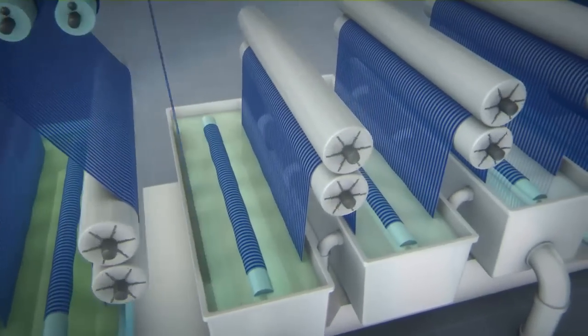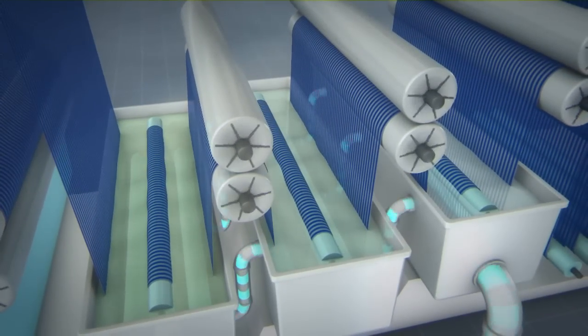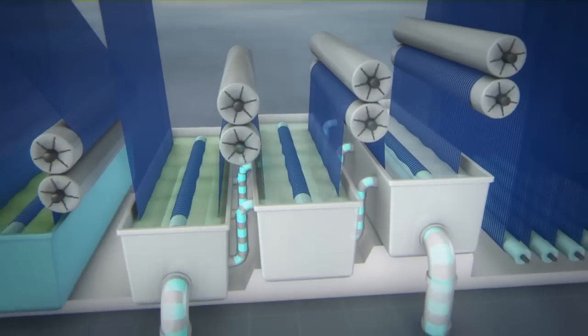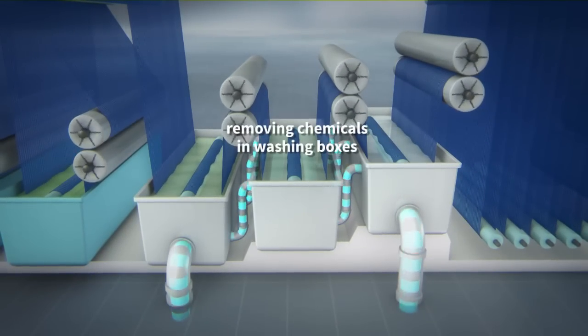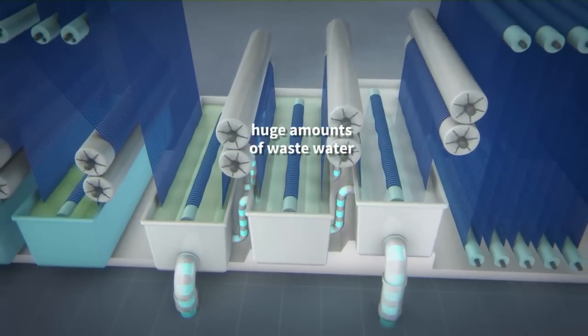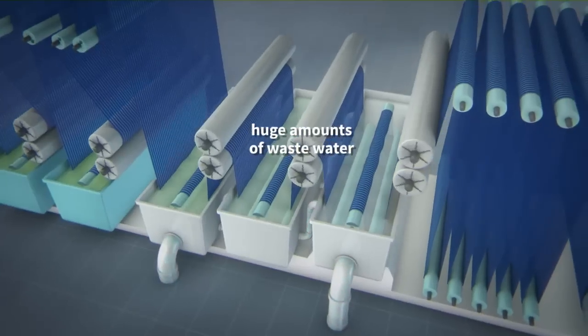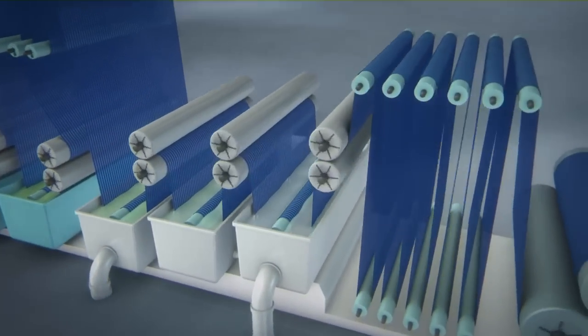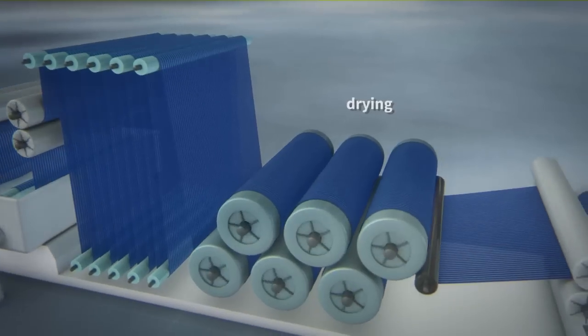This process not only consumes vast amounts of energy but also large quantities of water. The next step removes the chemicals previously added for cleaning and reduction, as well as the unbound indigo, in several washing boxes. This produces large volumes of colored wastewater contaminated with sulfites, which adversely impact the aquatic ecosystem.